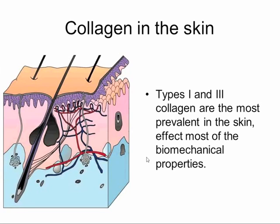Collagen in the skin: predominantly it's type 1 and type 3 collagens in the dermis — they're the most prevalent types, and they affect most of the biomechanical properties of the skin. Of course, we've also got other types of collagen mentioned in respect to epidermolysis bullosa — type 7 collagen — and type 4 collagen is also present in the skin. But in terms of amount, type 1 and type 3 are the most prevalent.